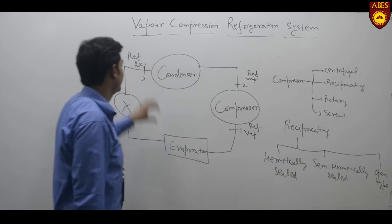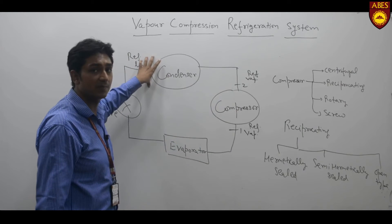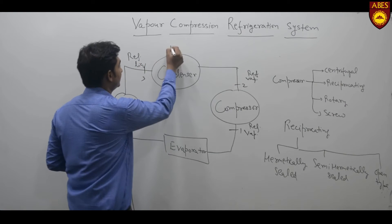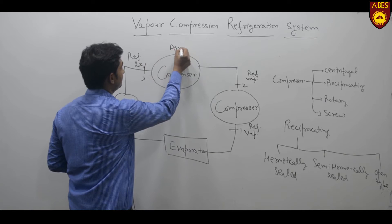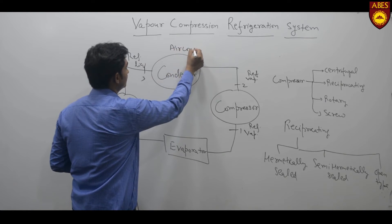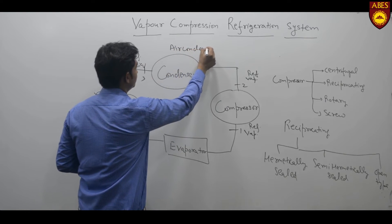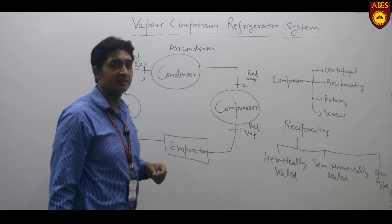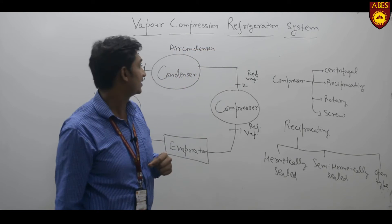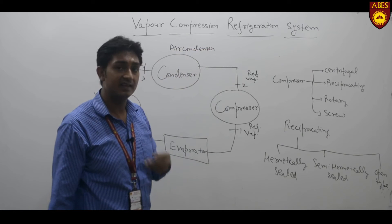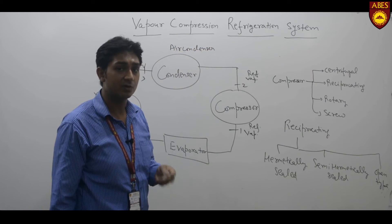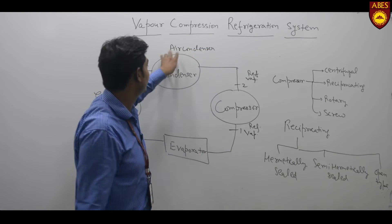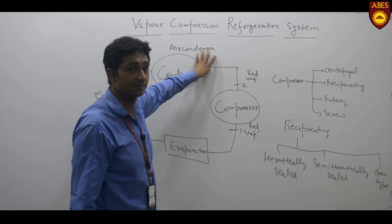The condenser used in home appliances is an air condenser. Condensers can be further classified as air condensers and water condensers, but in home appliances we use air condensers.